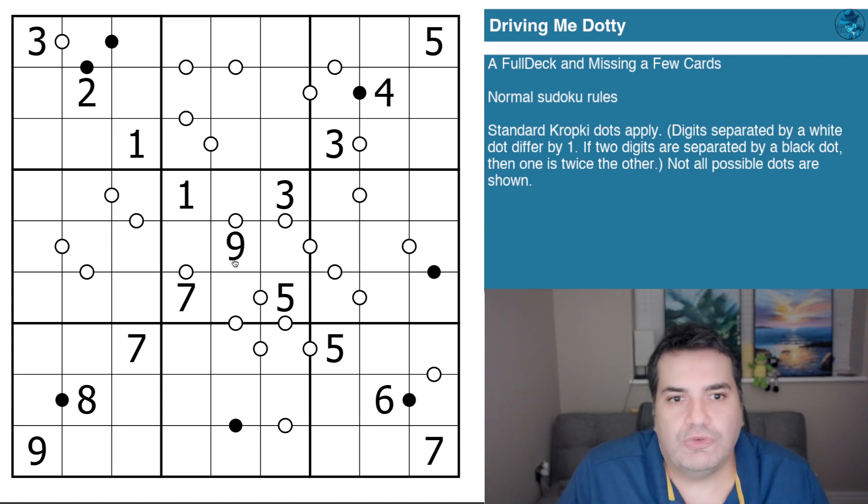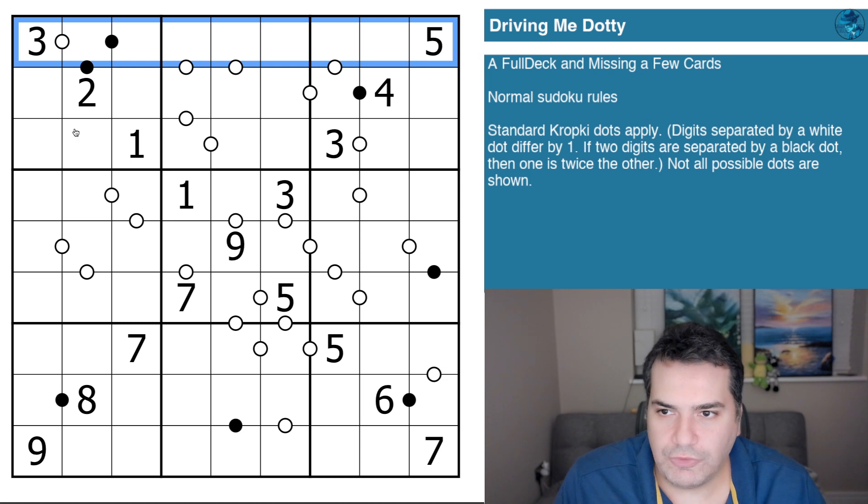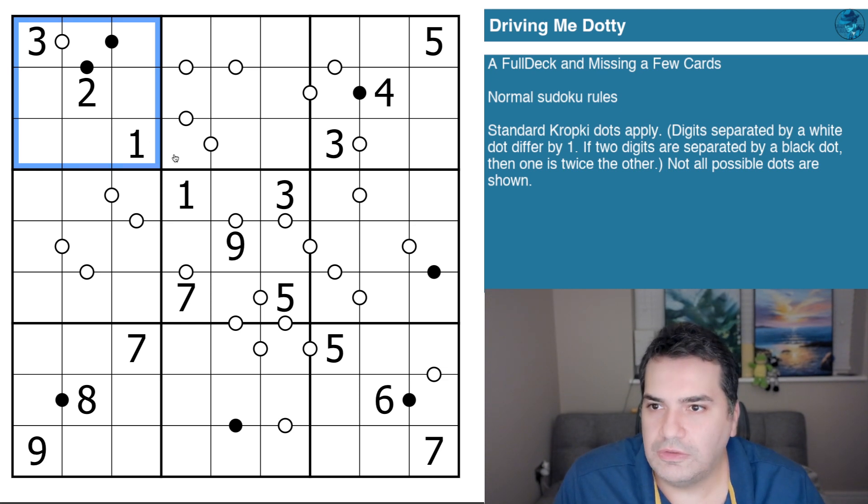Following rule sets: Normal Sudoku rules apply, so that means the digits one to nine in every row, every column, and every three by three box. Then it goes standard Kropki dots apply. Digits separated by a white dot differ by one. For example, this three here has a white dot next to it, so this is either going to be four or two.